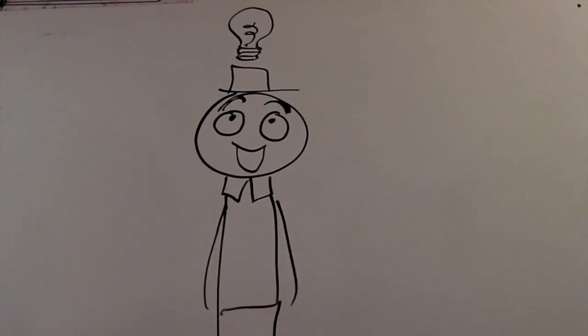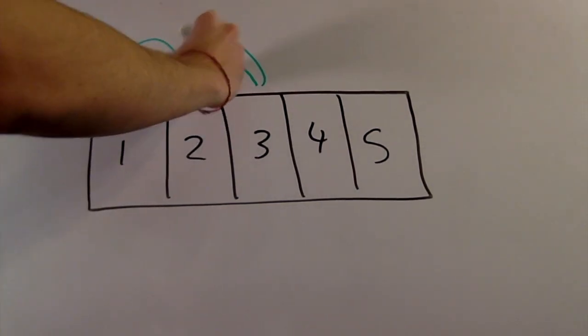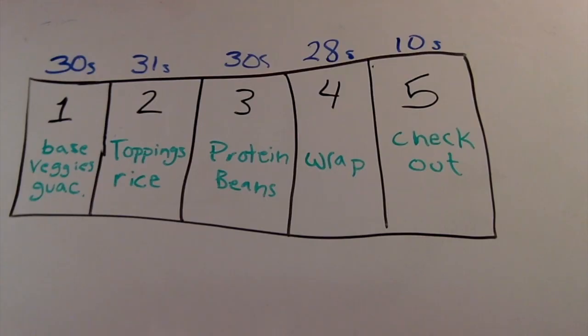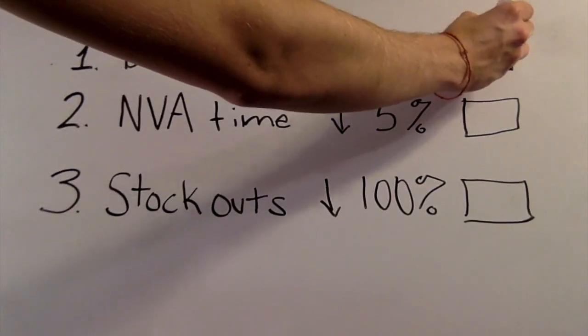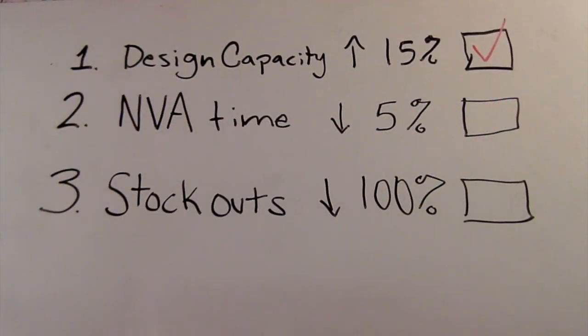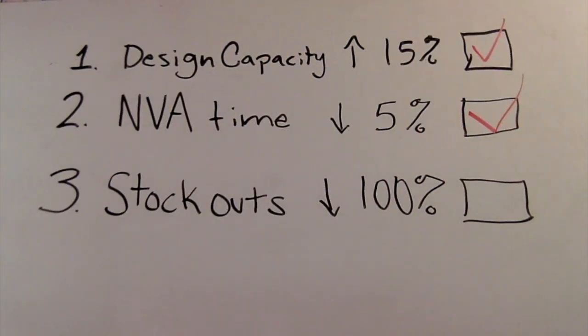The secret to accomplishing his goals lied in rearranging the tasks at his workstations. By moving the fajita veggies and guac to station one, the rice, salsa, sour cream and cheese and lettuce to station two, and the protein and beans to station three, Poncho came up with a new flow diagram. This new setup got rid of the bottleneck at station one, and reduced the cycle time from 36 seconds to 31 seconds. This is a design capacity of 116 burritos per minute, a 16% increase. The wait time between station two and three would go down from 13 seconds to just one second, or a 9.3% reduction in non-value added time.